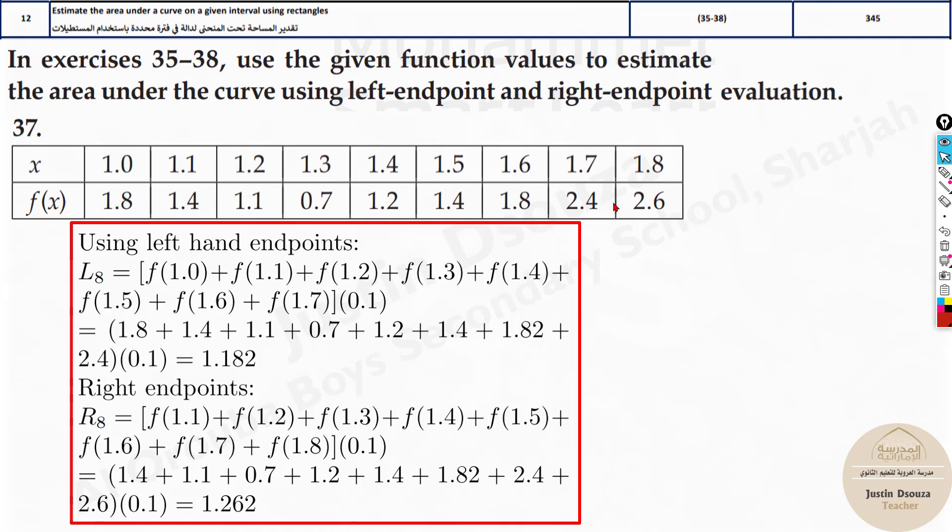Remember add these values for the left endpoint from the left side. Leave the last one and multiply by the interval. Here the interval is again 0.1. For the right endpoint start from the right side. Leave the leftmost point and multiply by the interval 0.1.